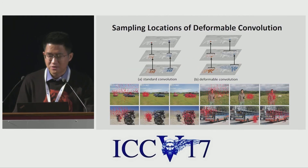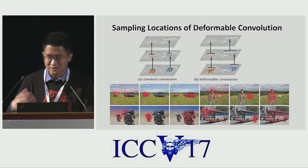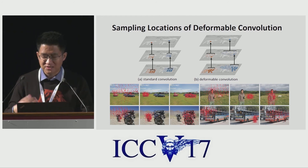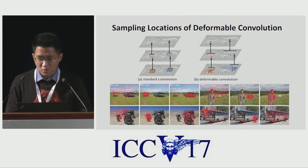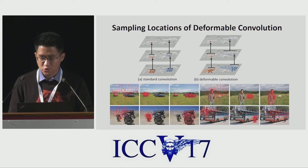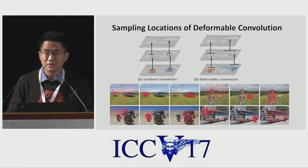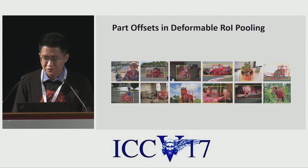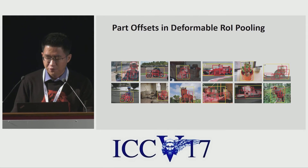The work is built on augmenting the spatial sampling locations in convolution and ROI pooling with additional offsets and learning those offsets for the target task. When deformable convolutional layers are stacked, the effect of composited deformation is profound, as exemplified in the top figure here. Each image triplet shows the sampling locations for three activation units on the background, a small object, and a large object, respectively. The effect of deformable ROI pooling is similar, as illustrated in the figures. The regularity of the grid structure in standard ROI pooling no longer holds; instead, bins derive from the ROI and move onto the nearby object foreground regions, enhancing localization capability especially for non-rigid objects.